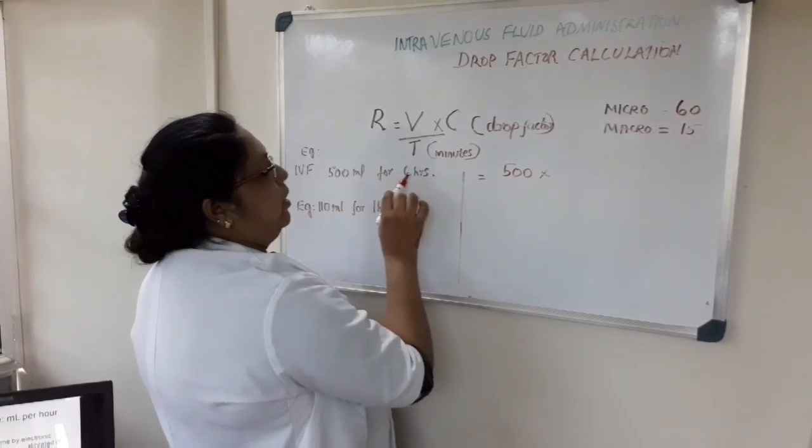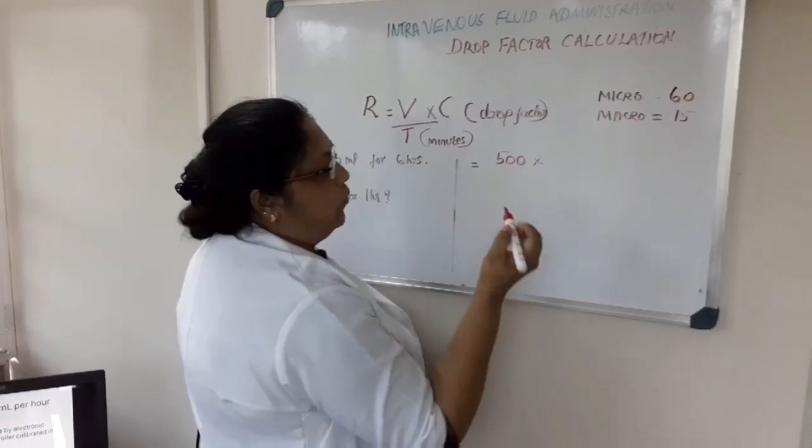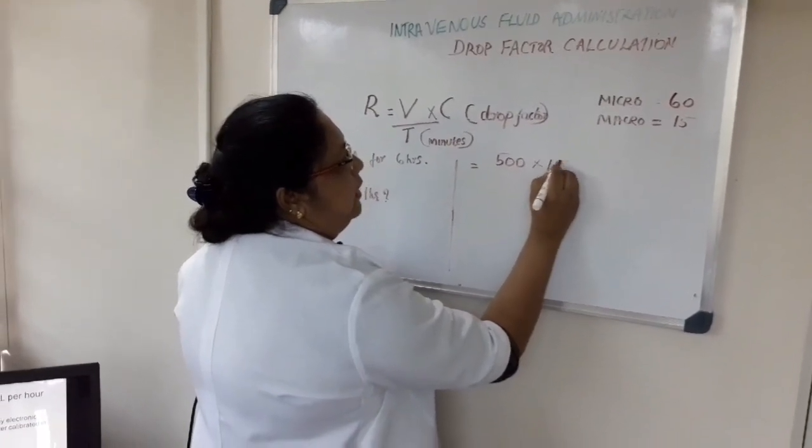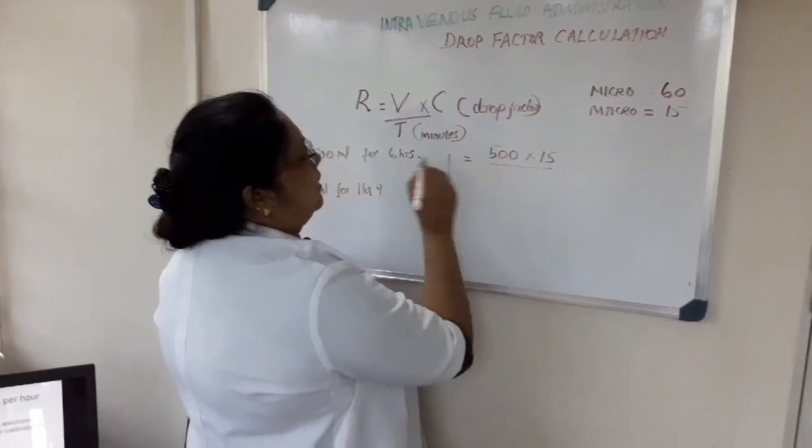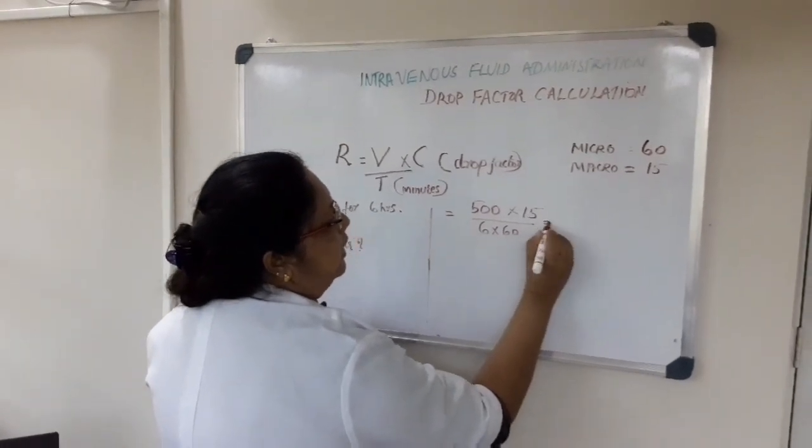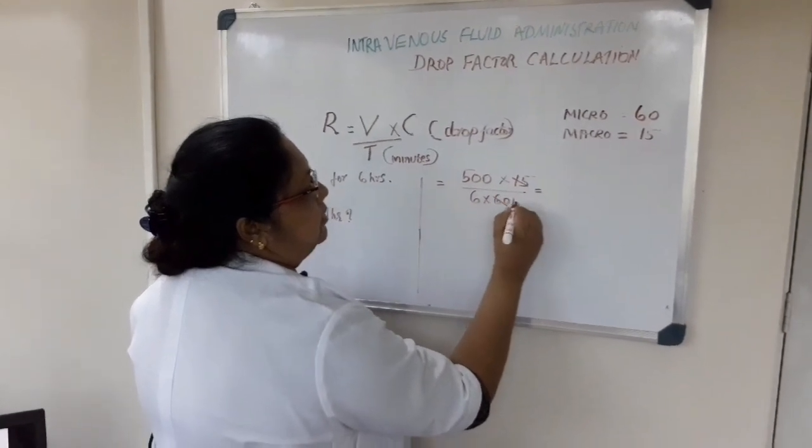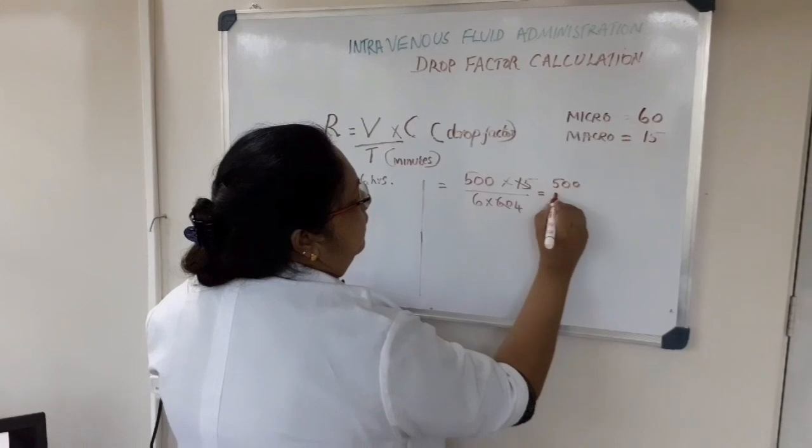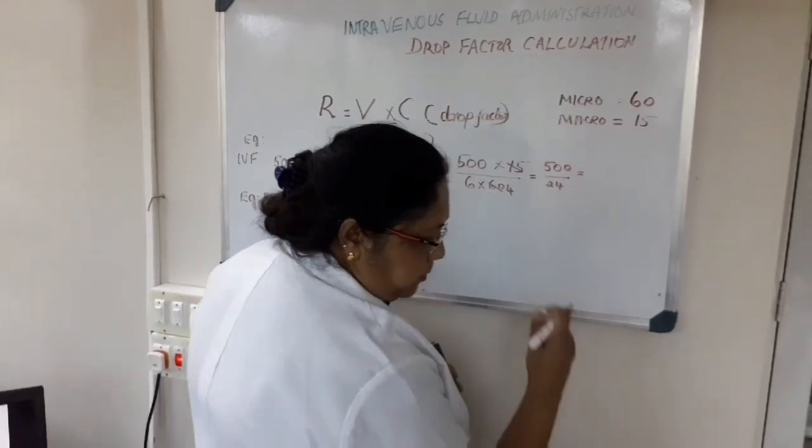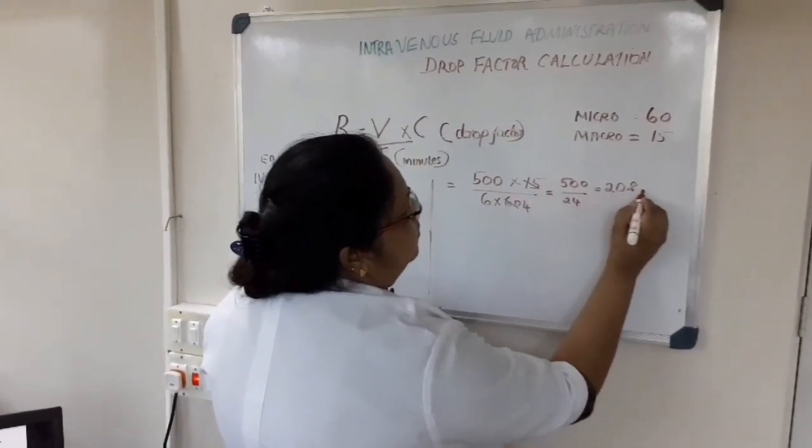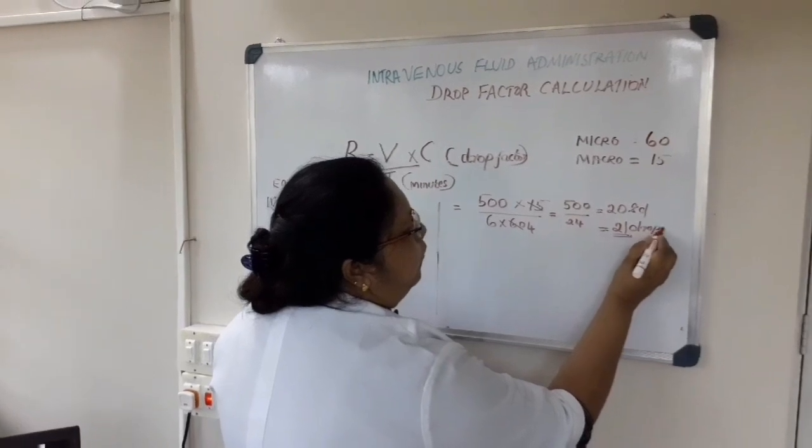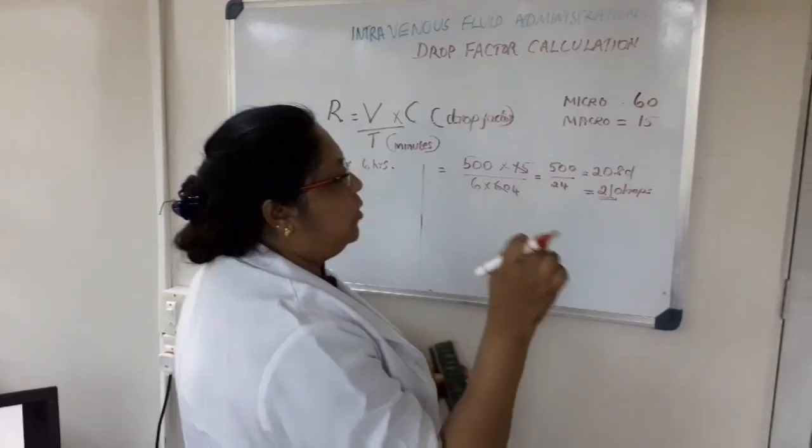If IV fluid is giving 500 ml for 6 hours, how will you calculate the drop factor? 500 ml into 15 is the drop factor and the time is 6 hours, so in minutes it is 6 into 60. If you want to get the rate, you can do the calculation. 15 you can cut. So 500 divided by 24, it will come as 20.8 drops or 21 drops per minute. Using your watch, you can adjust the rate as 21 drops per minute.